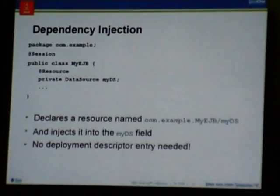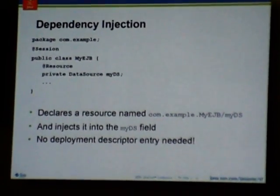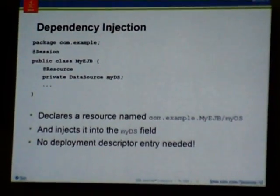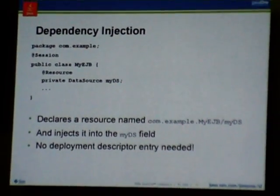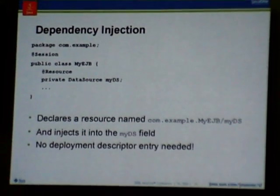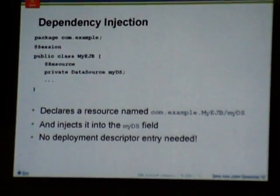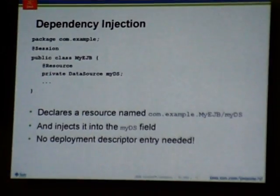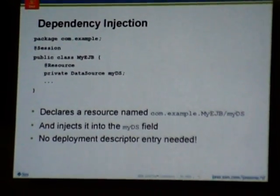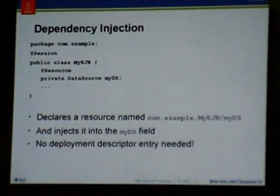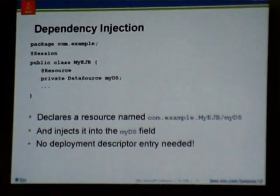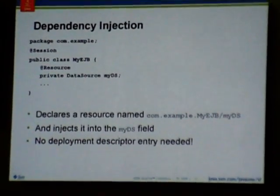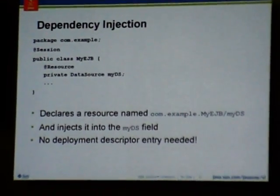So, in Java EE 5, we simplified this with dependency injection. The same example looks like this. EJB is much simpler — it's just a plain old Java object with the session annotation on it. We can declare our MyDS field, but all we need is that resource annotation on it, and that tells the container that we're using dependency injection to initialize that field.